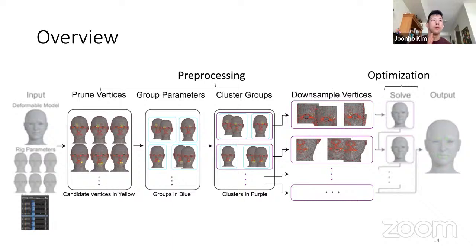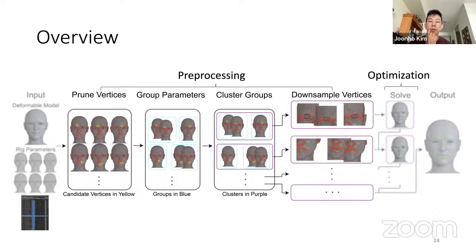First, we prune vertices that don't move with any deformation — you're not going to put a UI element on a vertex that doesn't move. Then there are sets of control rigs that can be joined together to form one UI element. A big example is a lip pucker where you want the lip to go either up or down — you can have just one UI element controlling up or down rather than two separate controls. For clustering, we group parameters so that UI elements on the upper half of the face don't necessarily influence locations on the lower half — we can separate those.